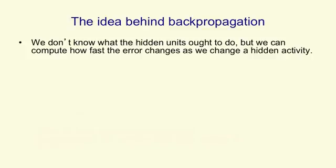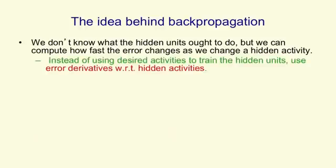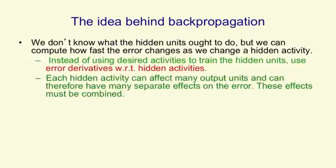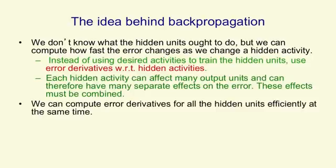The idea behind backpropagation is that we don't know what the hidden units ought to be doing — they're called hidden units because nobody's telling us what their states ought to be. But we can compute how fast the error changes as we change a hidden activity on a particular training case. So instead of using activities of the hidden units as desired states, we use the error derivatives with respect to activities. Since each hidden unit can affect many different output units, it can have many different effects on the overall error, and these effects can be combined efficiently — allowing us to compute error derivatives for all of the hidden units at the same time.